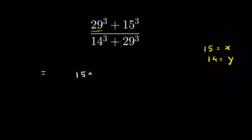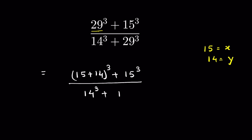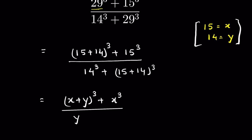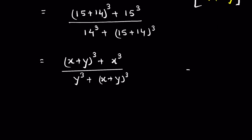So we can write 29 as (15 + 14), giving us (15 + 14)³ + 15³ in the numerator, and 14³ + (15 + 14)³ in the denominator. With x = 15 and y = 14, this becomes (x + y)³ + x³ upon y³ + (x + y)³.